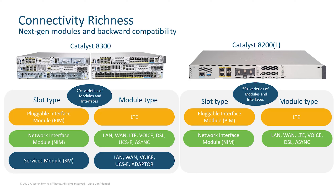As you see here, more than 70 varieties of modules are supported on the C8300 Edge platforms and more than 50 modules on C8200 and L platforms. For customers who want to move from ISR 4400 to C8300 for a network refresh, looking for backward compatibility on the modules, they would be able to reuse the same modules on C8300 and C8200 platforms for a smooth migration experience and interoperability.